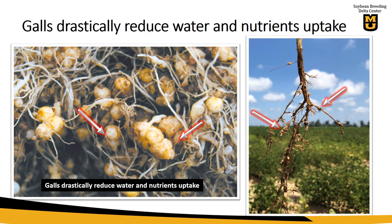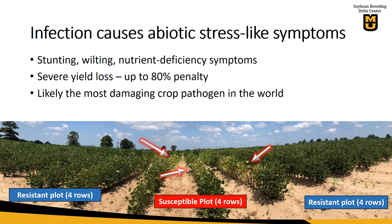The infection of nematodes in the plants causes what we call abiotic stress-like symptoms. You can see everything from stunting, wilting, and nutrient deficiency symptoms, because you're having less water and less nutrients. So the plants will respond. Because of that, we have severe yield loss. This is a very aggressive pathogen, and you can see yield losses as much as 80 to 90%. It's likely one of the most damaging pathogens in the world.